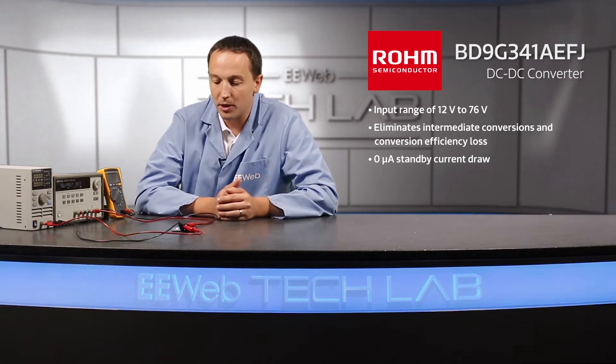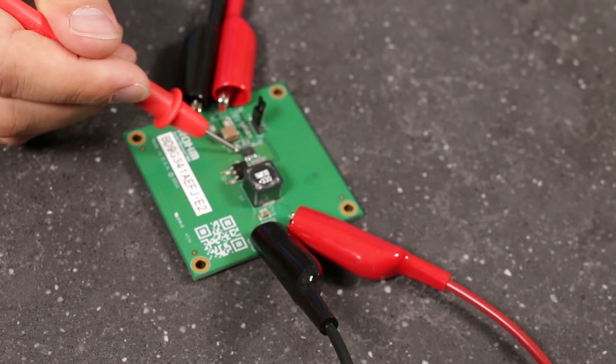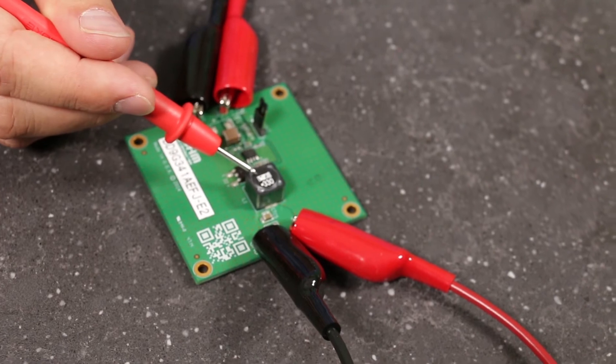Now on this hardware you can see just how simple the implementation is. On the board we have the converter, the output diode, and the output inductor. Beyond that there are just a few small passives.